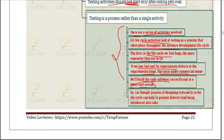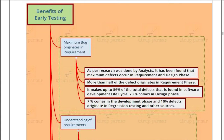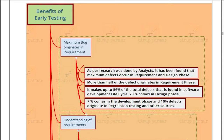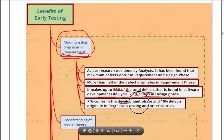There are many points here; you just need to prepare 2–3 points you can easily write. What are the benefits of early testing? Most bugs originate in the requirement phase, so if we follow early testing we can solve those bugs early and avoid bigger problems later. As per statistics, 56% of total defects are found in the development life cycle, of which 23% originate in the design phase and the maximum originate in the requirement phase. 7% come in the development phase and 10% originate in regression testing.